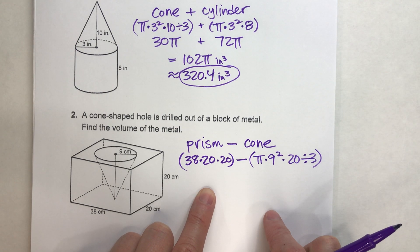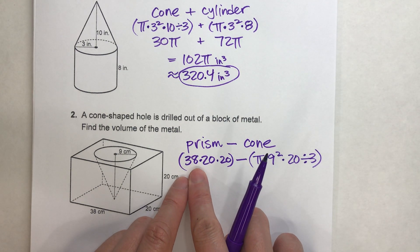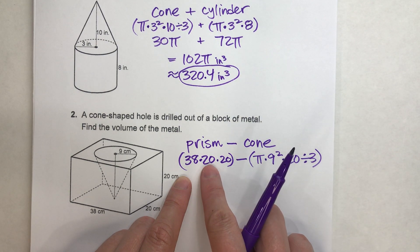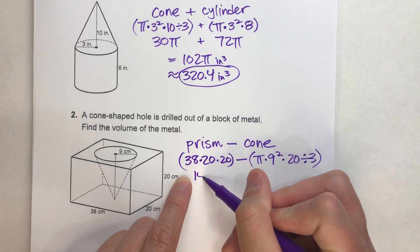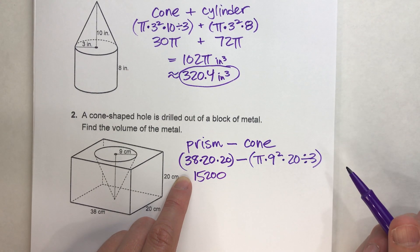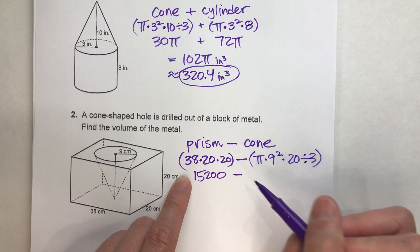But let's simplify this as much as we can. 38 times 20 times 20. Well, 20 times 20 is 400. 400 times 38 is 15,200. That's the prism.